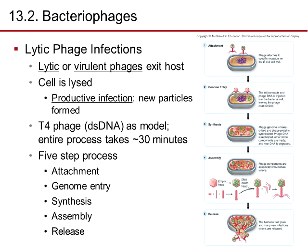Lytic (virulent) phages infect the host cell. The cell is lysed, and productive infection forms new particles. Lytic phages cause growth inside the cell, kill the cell, and then the cell opens and releases new virons. The T4 phage with double-stranded DNA is the model — the entire process takes about 30 minutes. Viruses mutate at a very fast rate, at least every 10th generation, producing new generations every 30 minutes, meaning a mutation can occur roughly every 300 minutes.